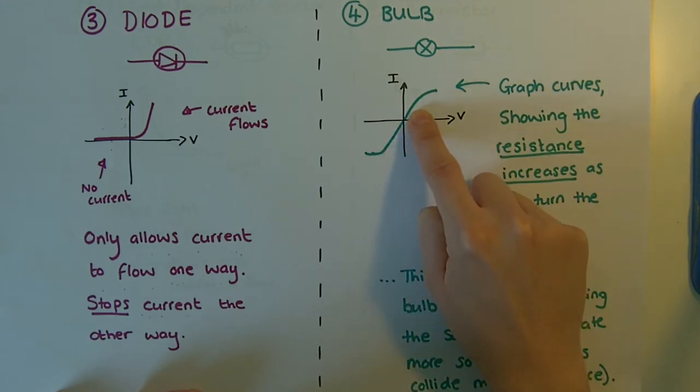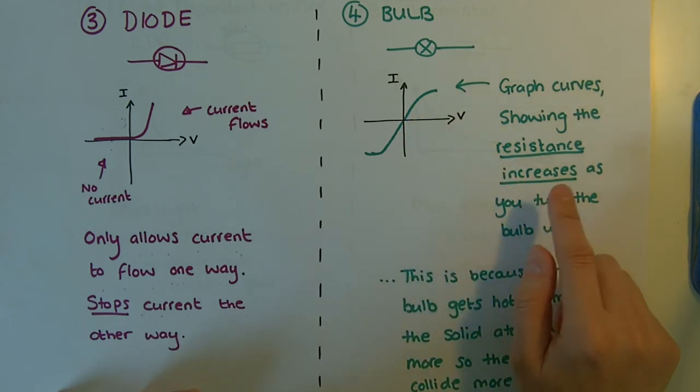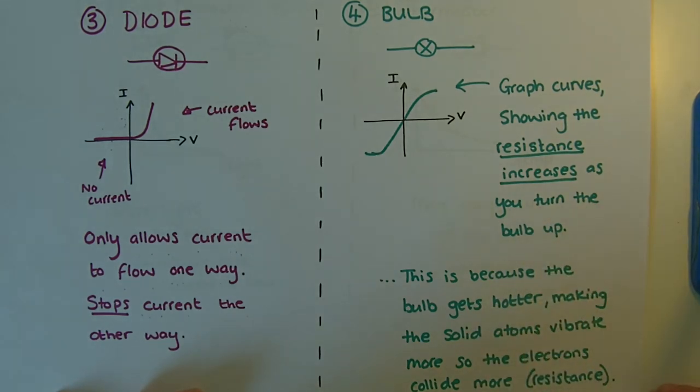Initially, the gradient's the same, so the resistance is the same. But then it starts to curve. That shows us that the resistance is increasing as you turn the bulb up.